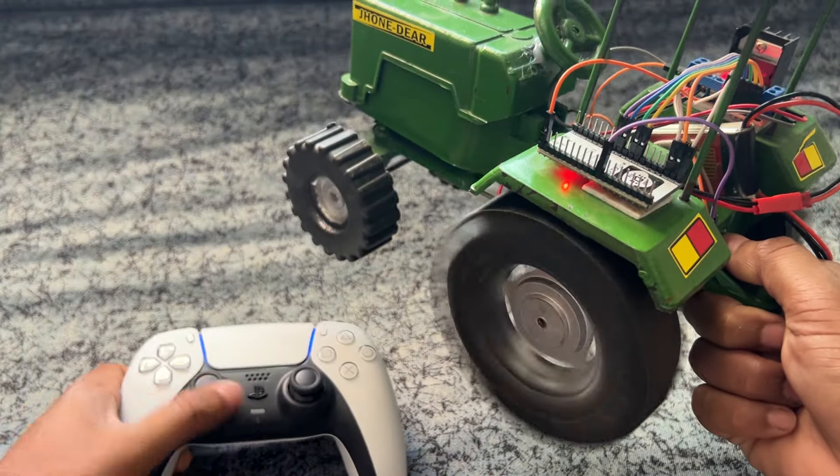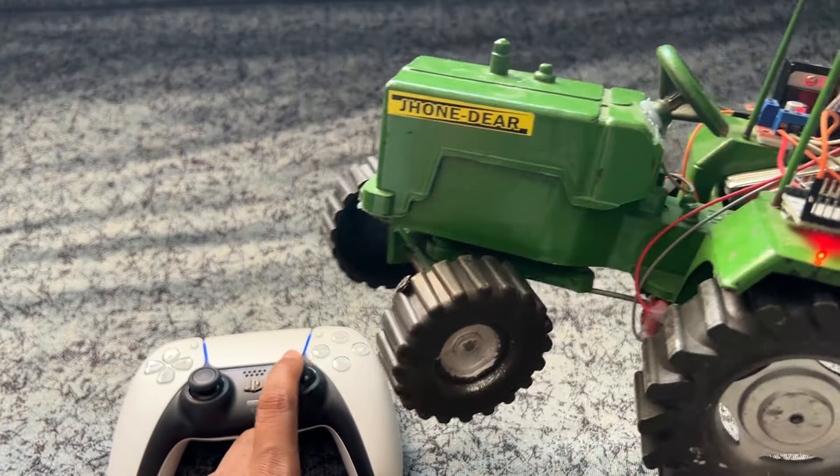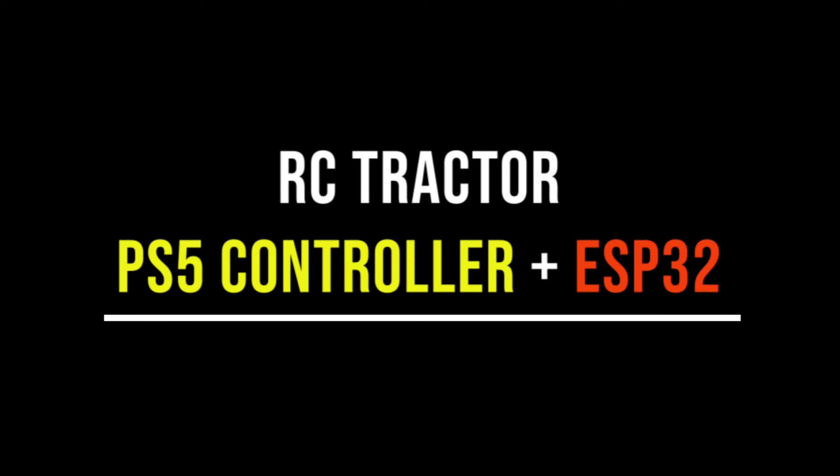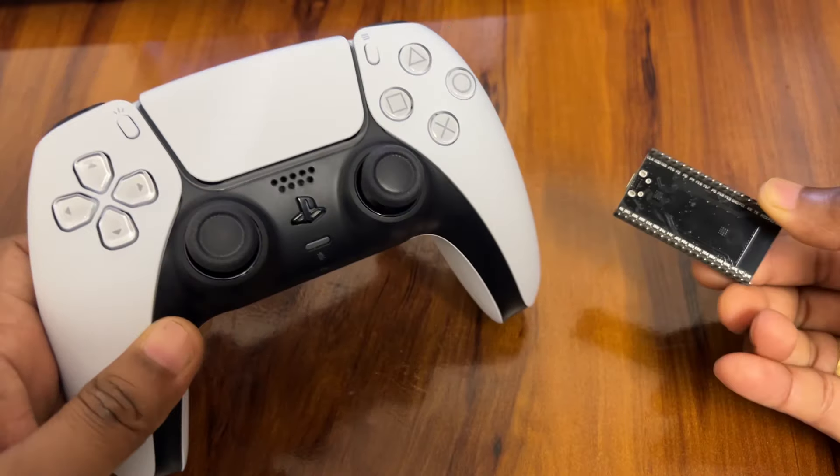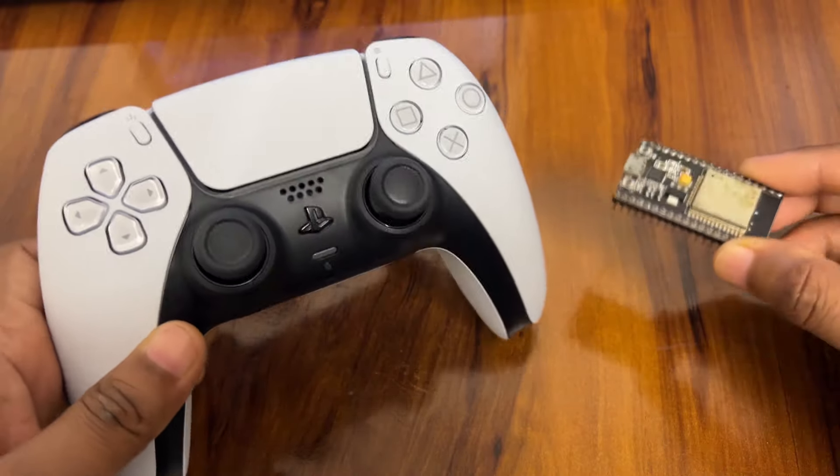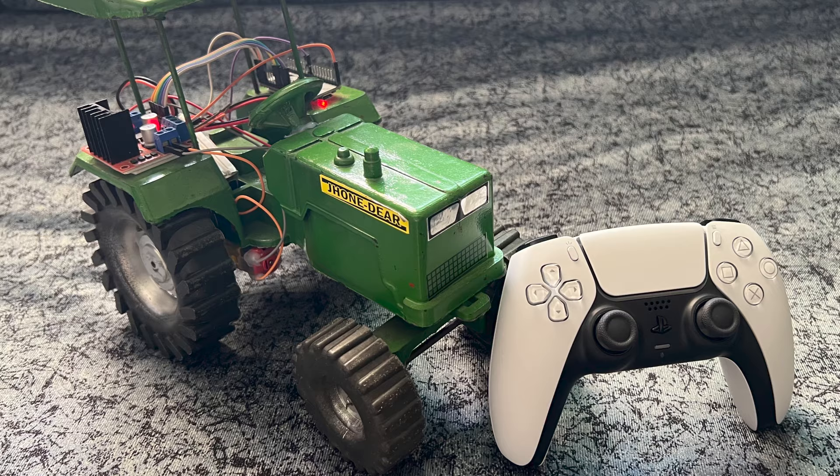Hey guys, welcome back to Hash Include Electronics with another video. In this video, we are going to make an RC tractor with PS5 controller and ESP32 module. We will pair the PS5 controller with ESP32 module and send commands to control the tractor. So let's get started and make this tractor.